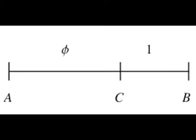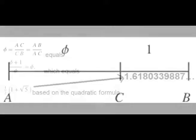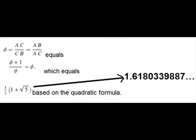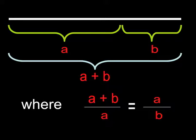Visually, we can see that line AB is longer than AC, and AC is longer than CB. When the ratio of AB to CB is the same as the ratio of AB to AC, the line is cut according to the Golden Ratio.